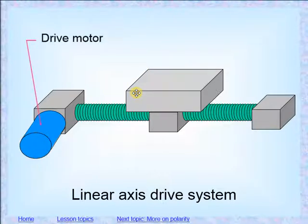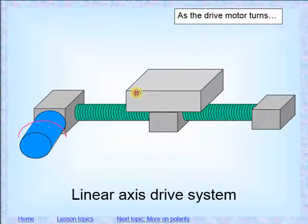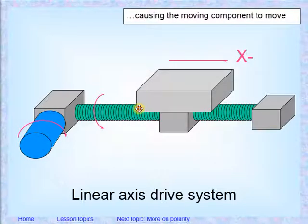So we have the drive motor, ball screw, and when the motor moves or rotates, it then moves the ball screw and the table will move back and forth.